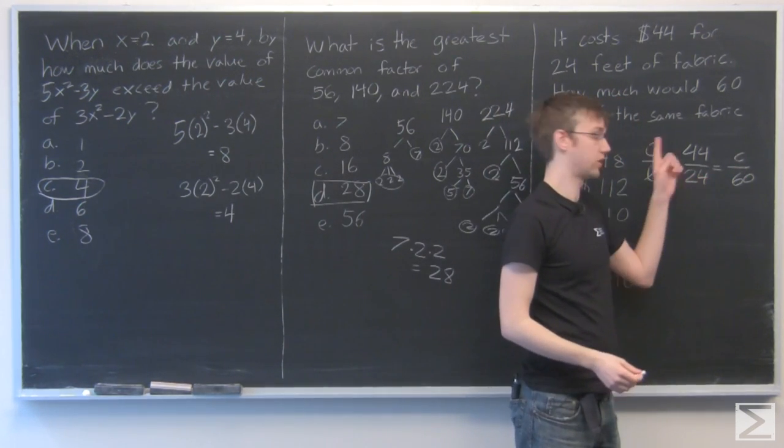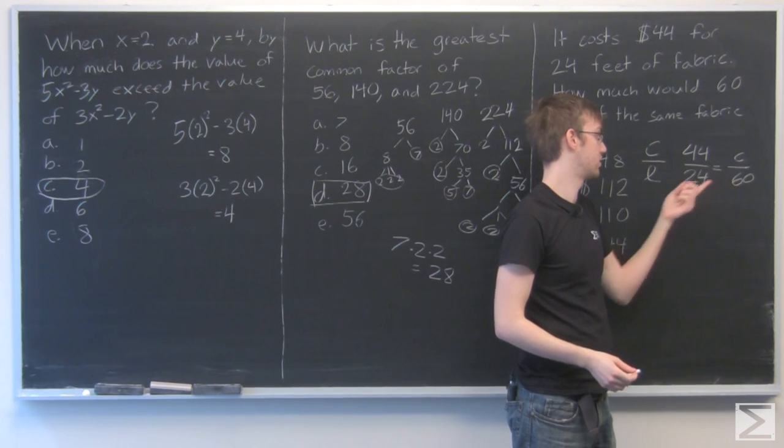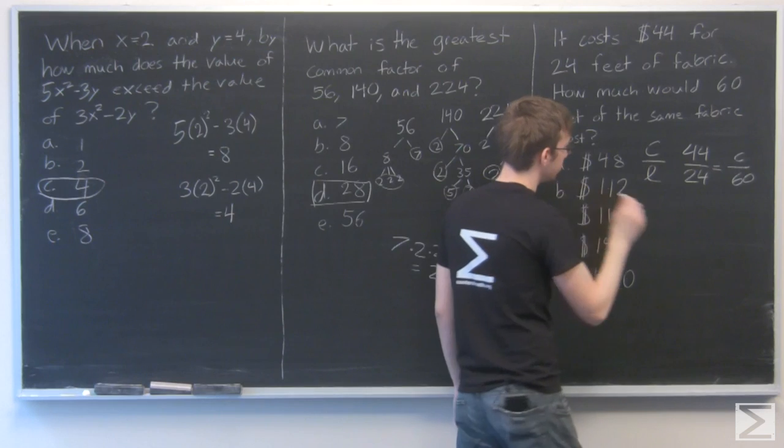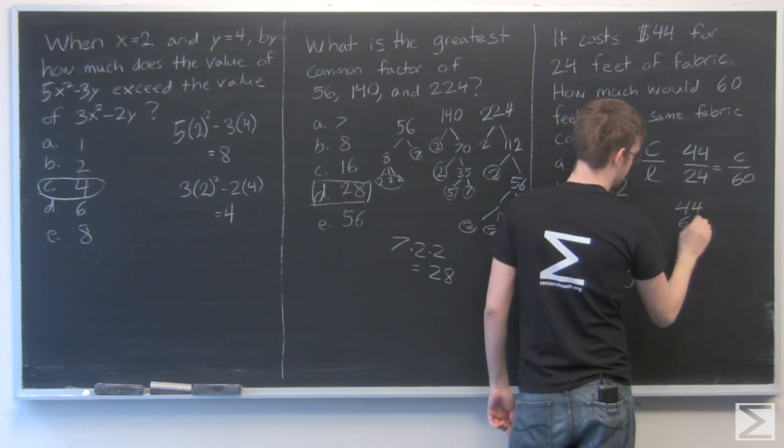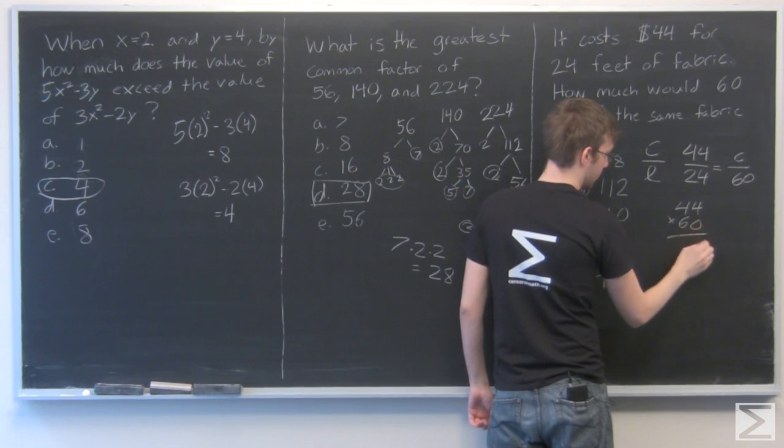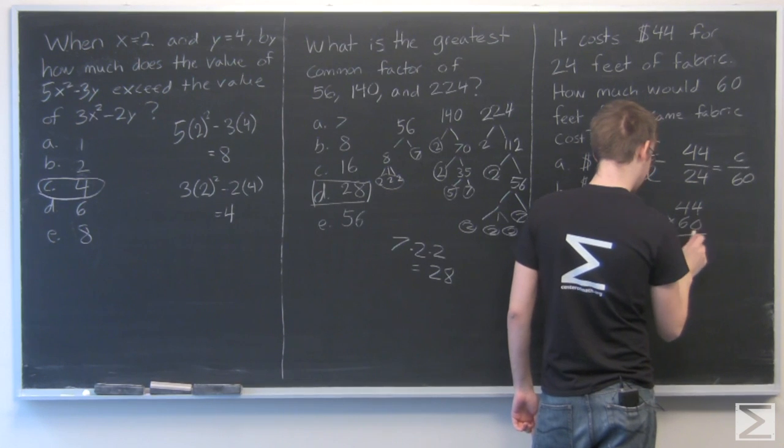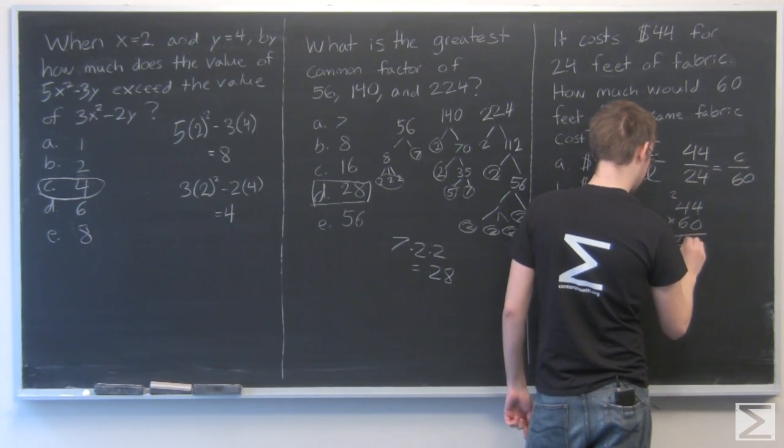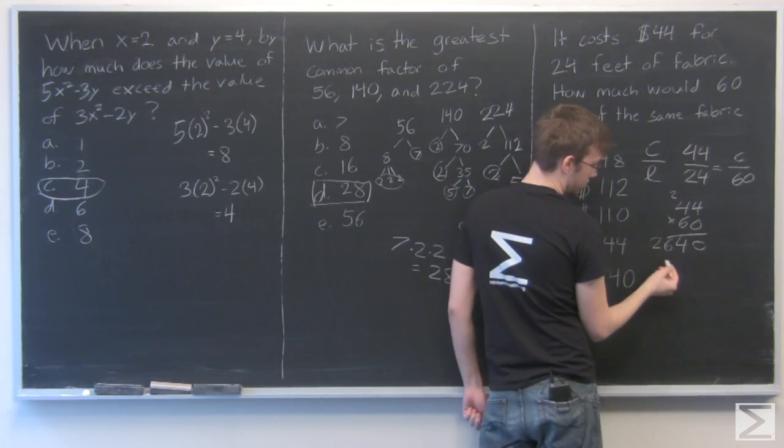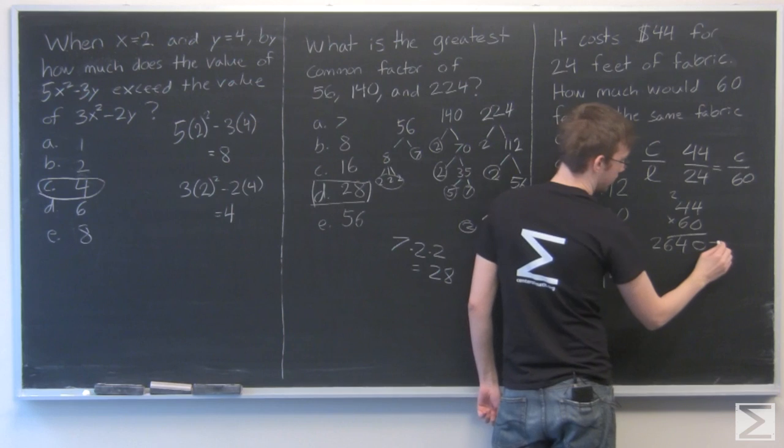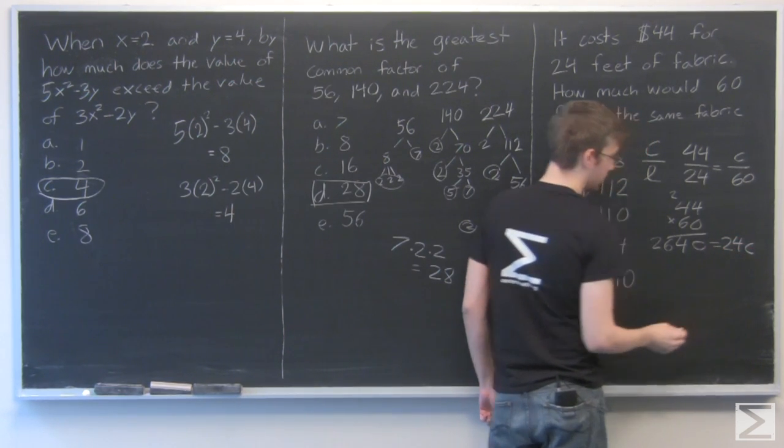So to solve this, we know that cross-multiplying will give the same answer. So 44 times 60 is going to equal 24 times C. So 2,640 is equal to 24C. Now we'll just solve for C.